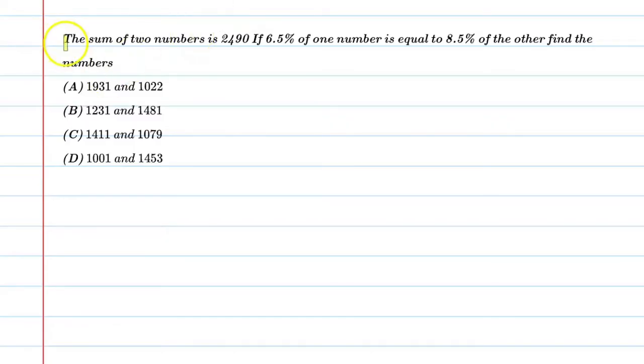Hello students, let's solve this question. The sum of two numbers is 2490. If 6.5% of one number is equal to 8.5% of the other, find the numbers.